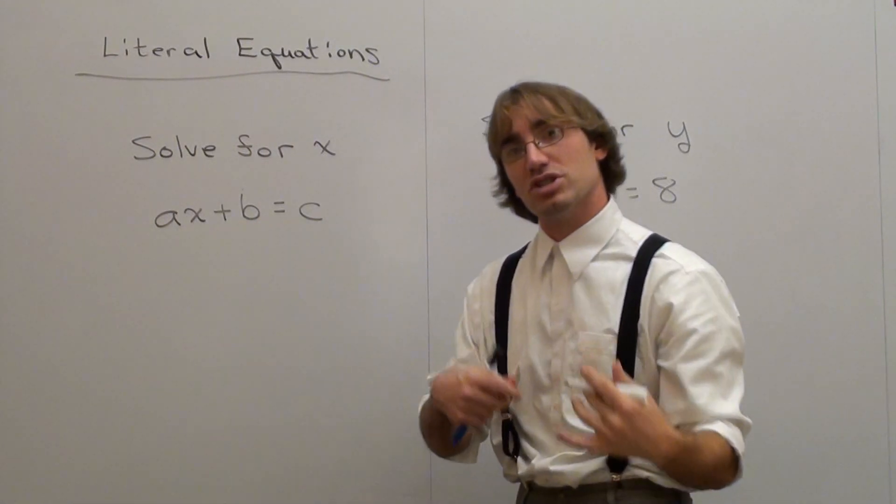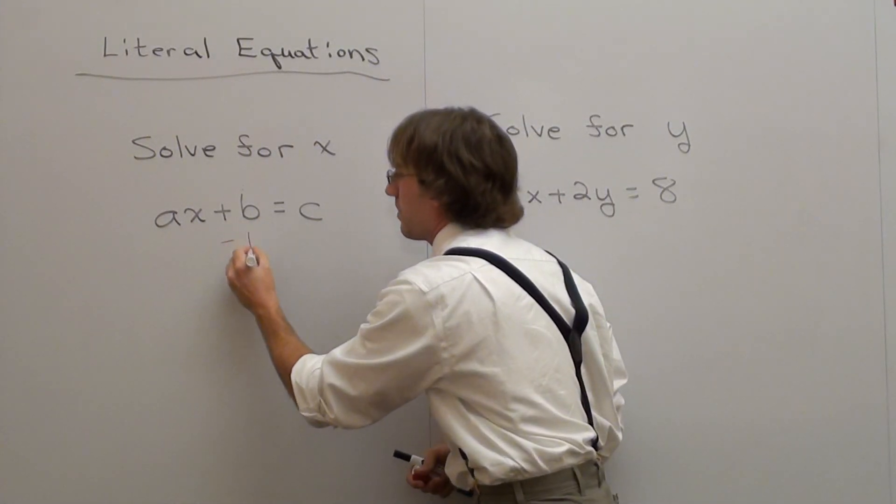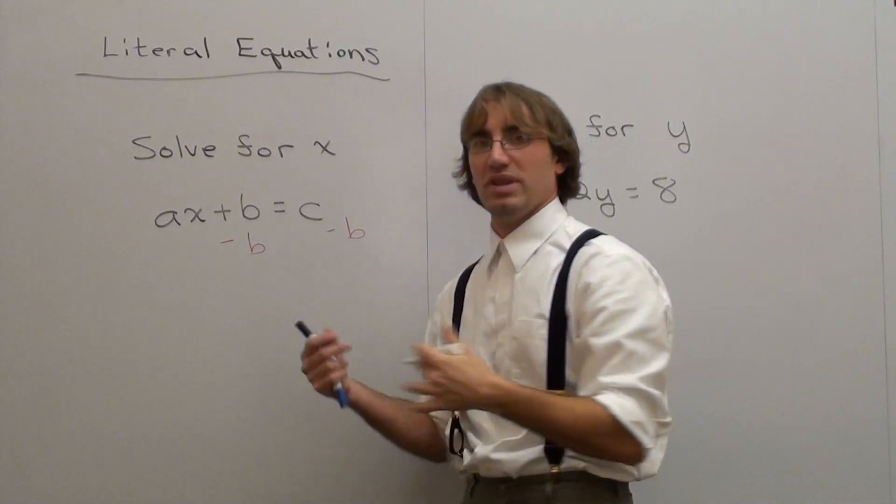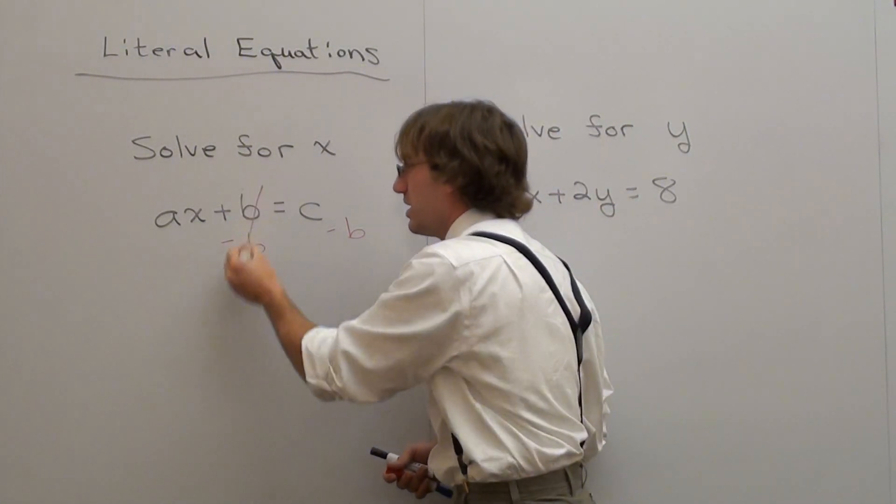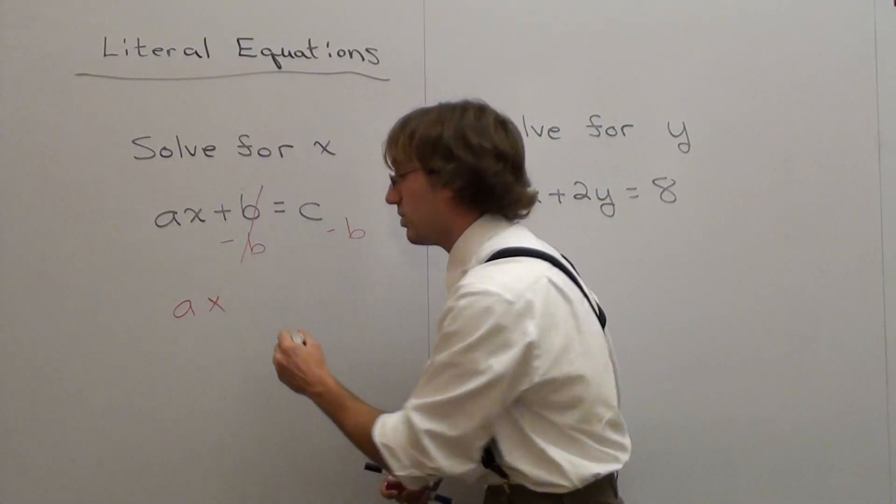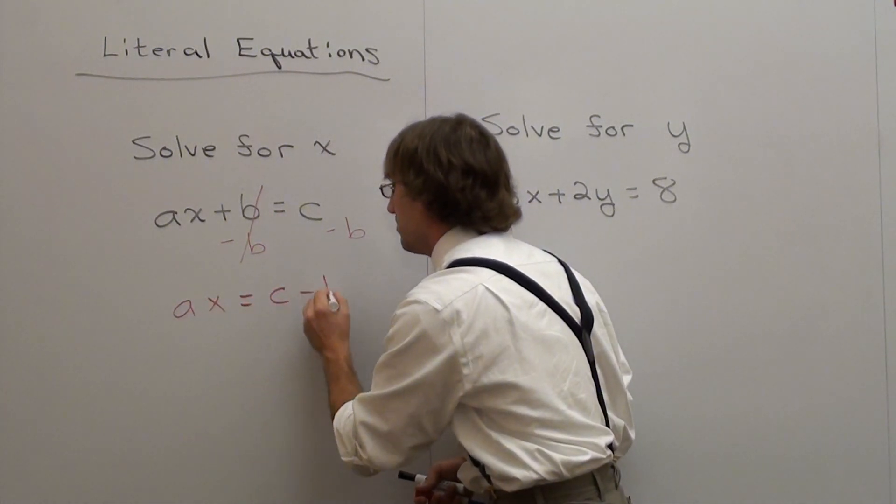So this is a positive b. I'm going to subtract b on both sides. There is no like term that it combines with, so it's a little confusing for students. b minus b, zero, cancels.